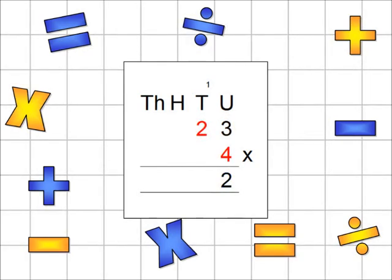The next part of the question: you are looking at 4 multiplied by 20, which looks like a 2 in the tens column. The answer is 80, which appears as an 8 in the tens column. But you also have the 1 that you carried from the previous part of the question. This is brought down and added to the answer in the tens column, so the 8 in the tens column becomes a 9. It's a good idea to cross out any of the carried numbers once you've used them, to stop you getting confused in more difficult questions. The question is now finished, and the answer is 92.